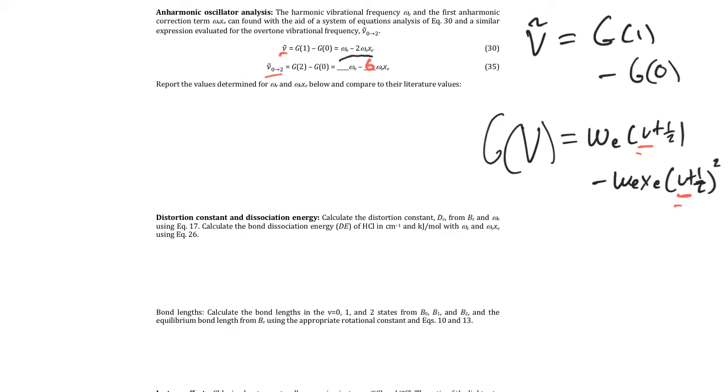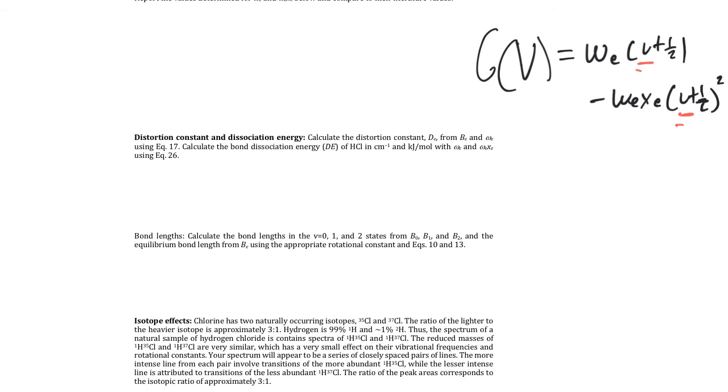So, so far we should have determined BE and alpha E that you can look up on NIST, and then omega E and omega E XE that you can also look up on NIST and compare. And then lastly, well not lastly, but getting to it lastly, we can determine distortion constants. The distortion constant we calculate using equation 17. To scroll back if you need it, it's just calculated off of BE and omega E. There's the equation that involves beta that I find doesn't work as well, so we just recommend using equation 16.